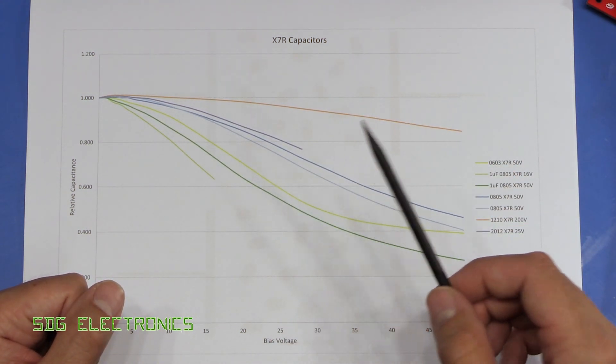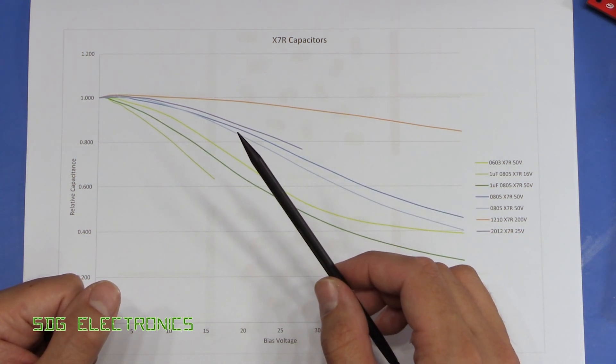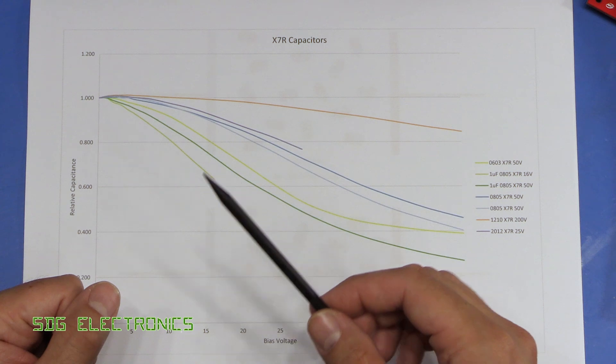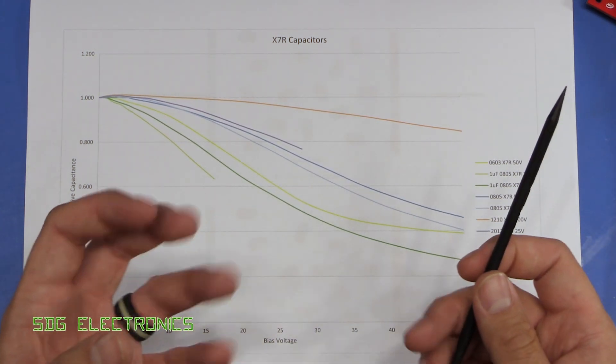The downside to that is that very small ceramic capacitors are excellent for decoupling because they have such a low inductance. So by moving to a higher physical size, then the inductance will be increased and therefore you may have other effects.